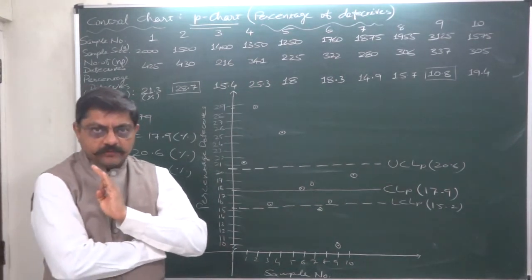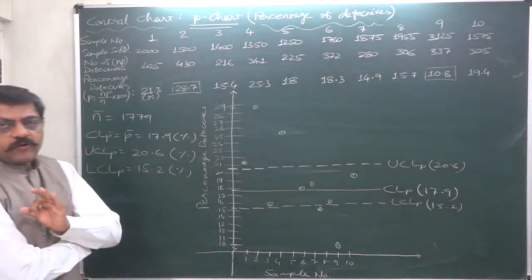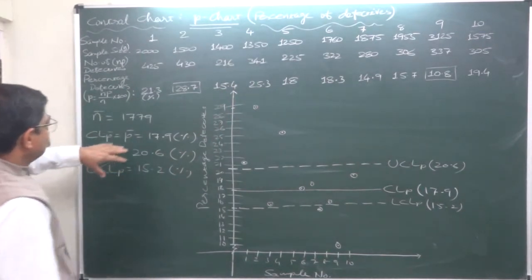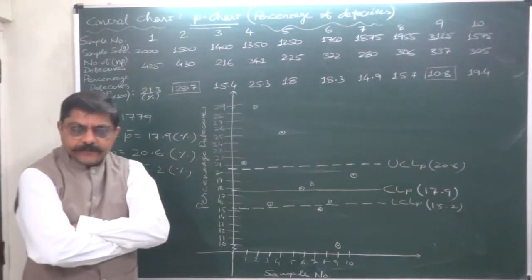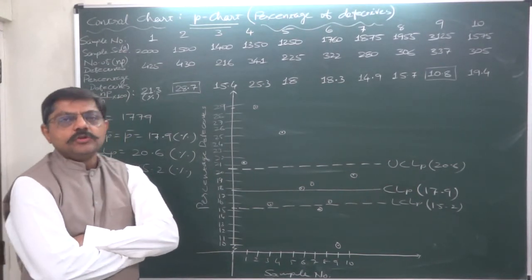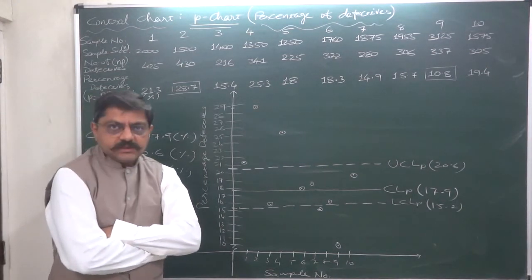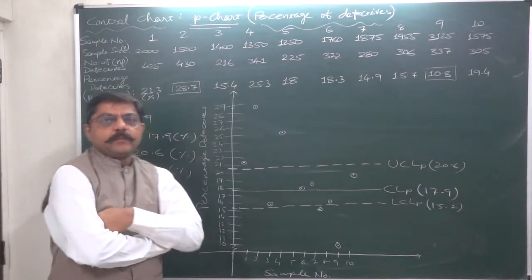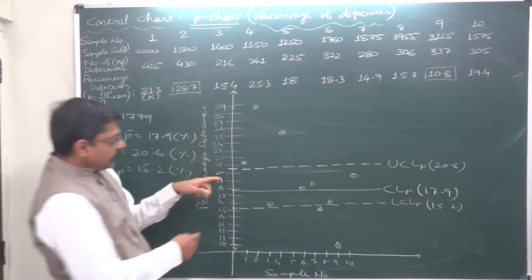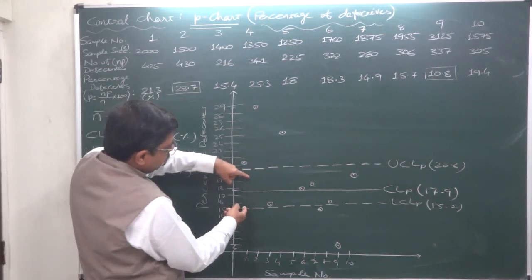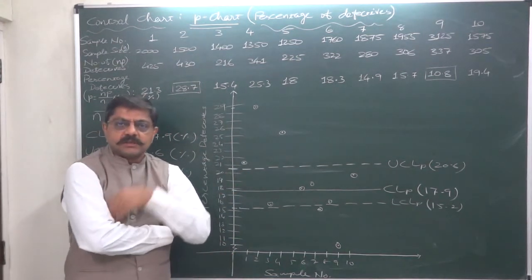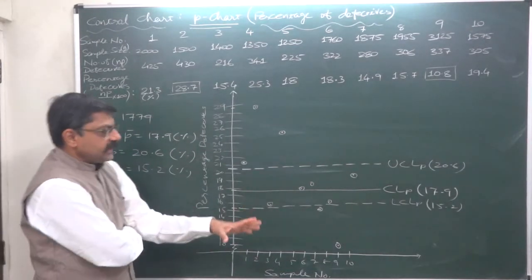If only one point is either above the UCL or below the LCL, strictly we have to conclude that the process is not under control. We have to be stringent because from a very huge production quantity we have just taken 10 samples, 17,790 units we have examined. On the basis of this we have to conclude for a very huge production for a specific period. That's why we have to be very stringent. All the samples, only if all the sample points are within upper control limit and lower control limit, then only we conclude that the process is under control.